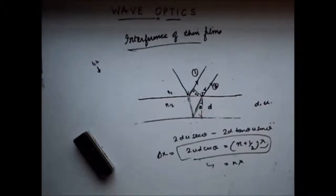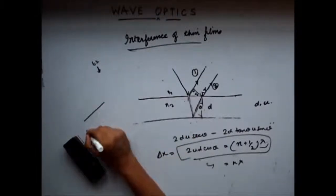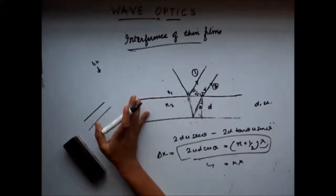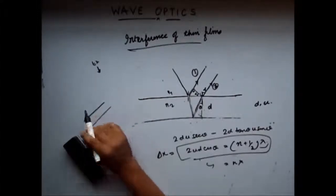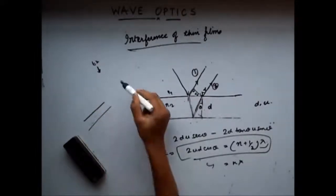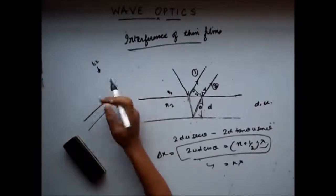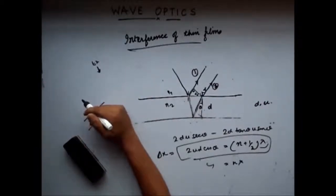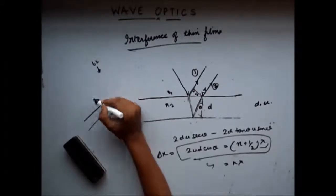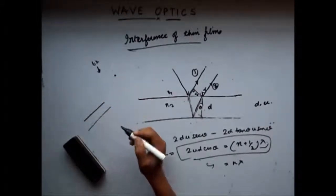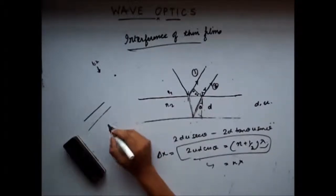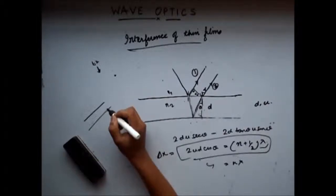Now let's take the case of an oil film and understand why the colours change when viewing the film from different angles and distances. The thin film of oil behaves as a thin film as we discussed, so we have an interference pattern. When you keep looking at the thin film from different distances and angles, the path distance covered by both light waves keeps varying, and for a particular point the path difference is such that for some lambda we get constructive interference.